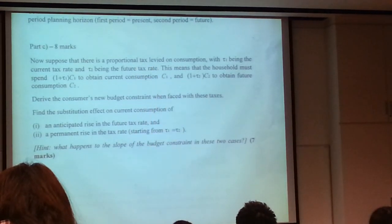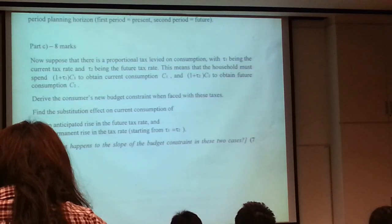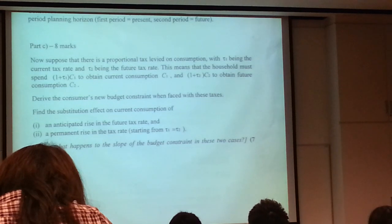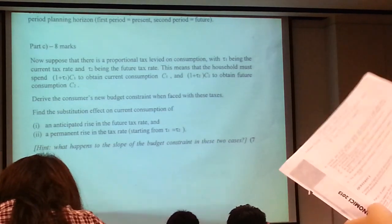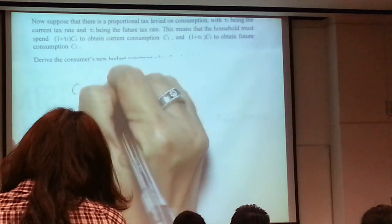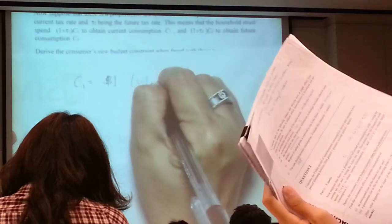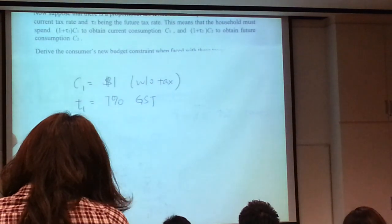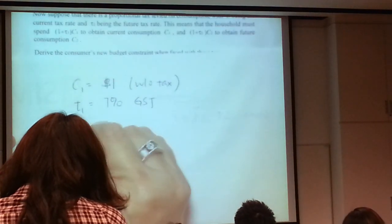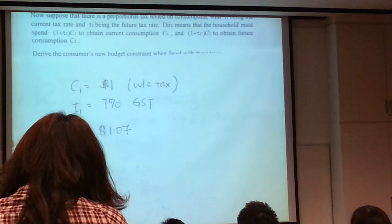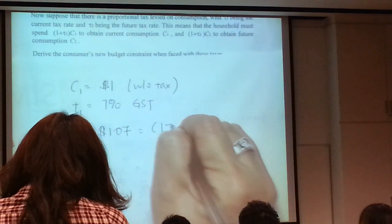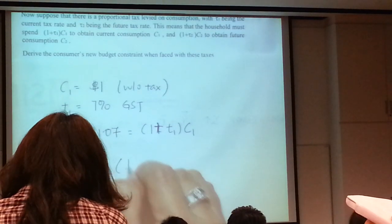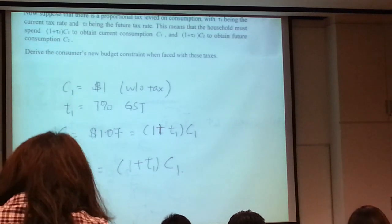Instead of C1, it became 1 plus T1, C1. And instead of C2, it became 1 plus T2, C2. So this is actually the concept. This is not the exam answer, but just to demonstrate what this paragraph is talking about. Imagine C1 was $1, that was without tax. So now let's say T1 is our 7% GST.